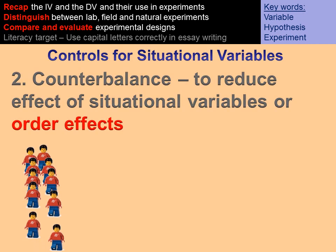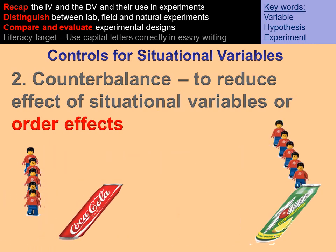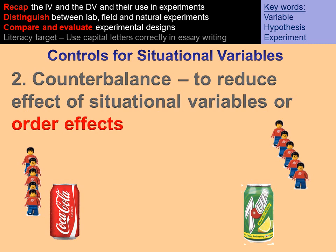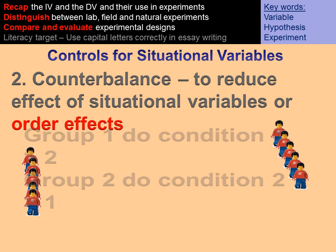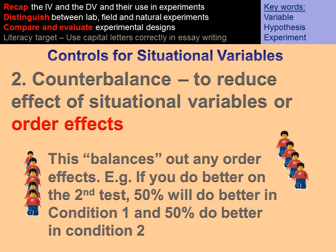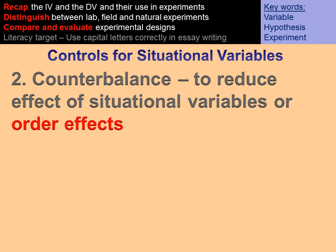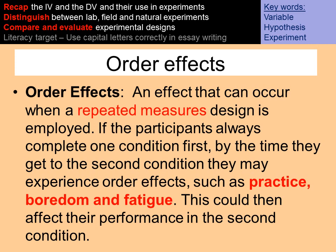To control situational variables you can counterbalance the results — split the group in half, one half does condition one first and the other does condition two first, then you swap. This will balance out any effects within the order. Order effects are the effects that can occur within repeated measures designs where participants may practice and get better the second time, or by the second time they're bored or tired, which will influence results.